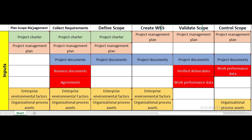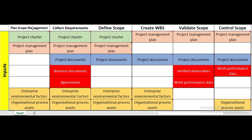The first four processes — plan scope management, collect requirements, define scope, and create WBS — all belong to the planning process group. Validate scope and control scope belong to the monitoring and controlling process group.